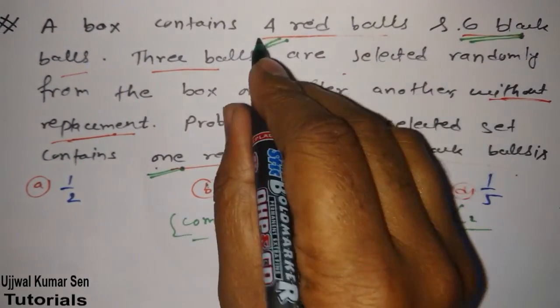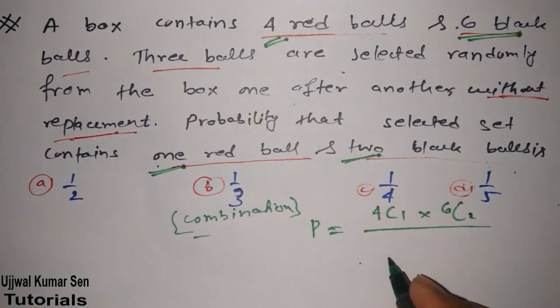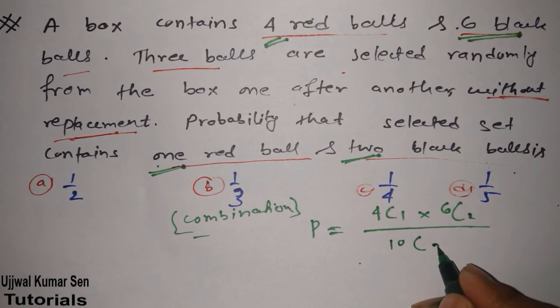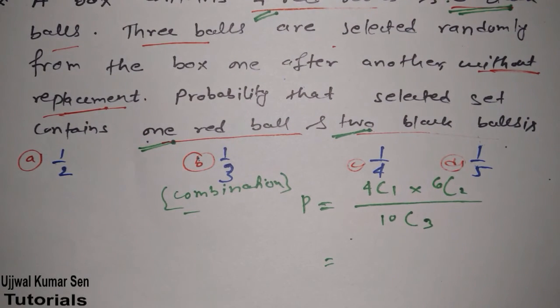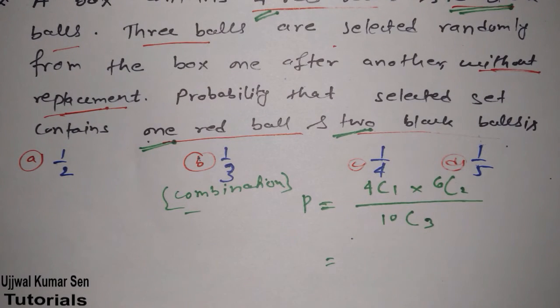So total balls are 10 and we are choosing three. That means this is it. If anyhow you can do this, then things become simple. You just put the values on your calculator and get the right answer.